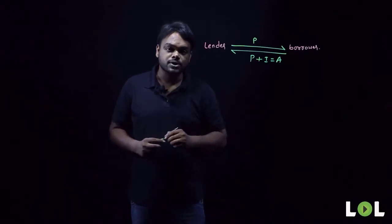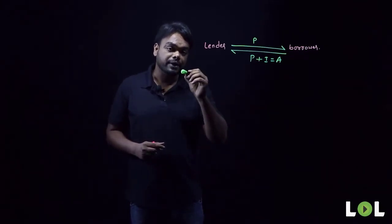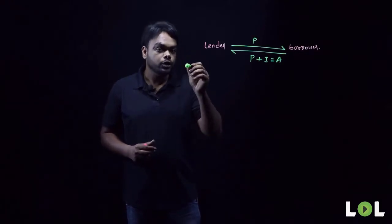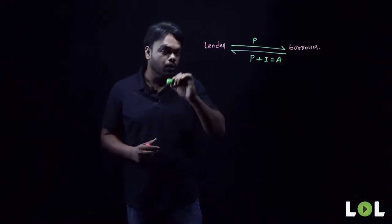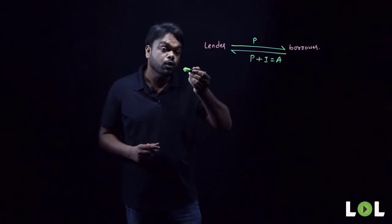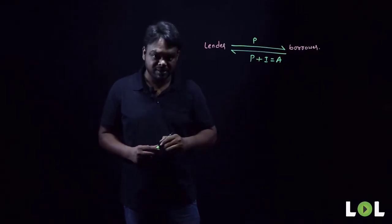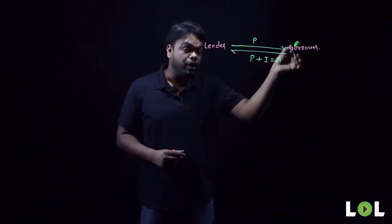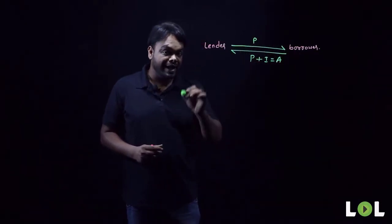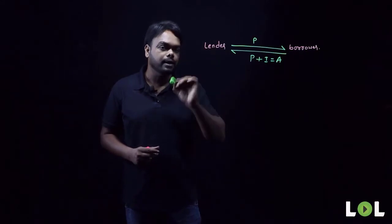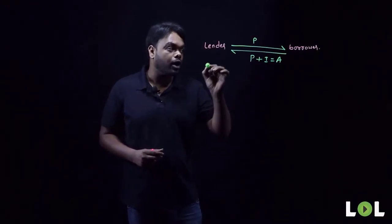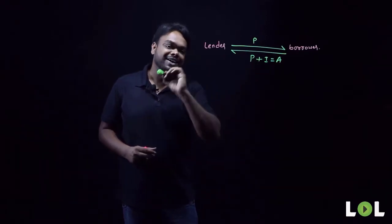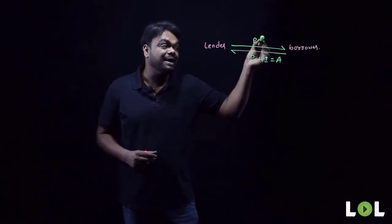When you rent a house, every month you pay rent to the owner because you are utilizing the owner's resources. Likewise, the principal money the borrower has taken from the lender is a resource of the lender, so for using it the borrower pays a rent, which we call interest. That is the extra money paid by the borrower to the lender.